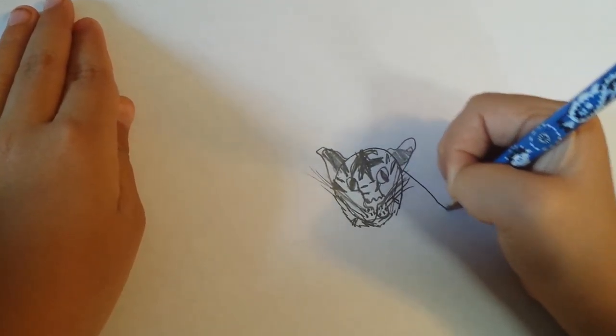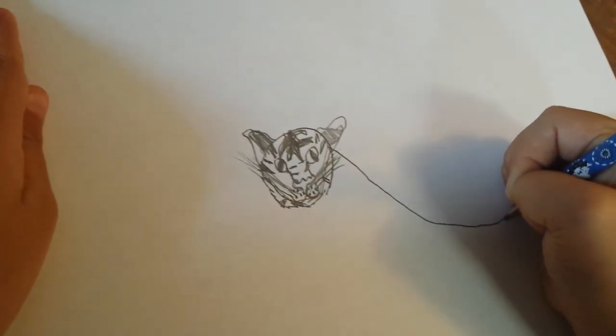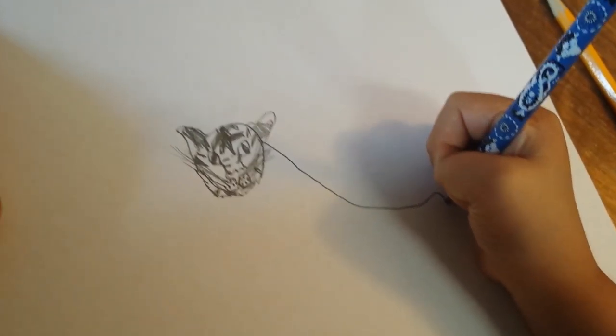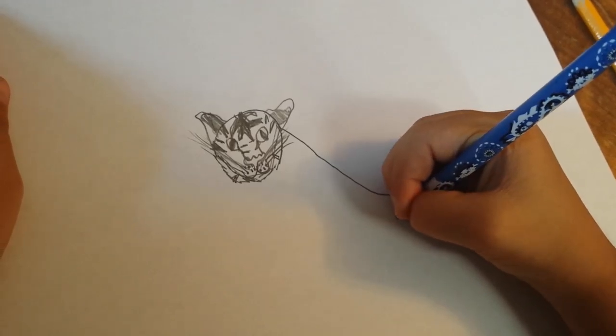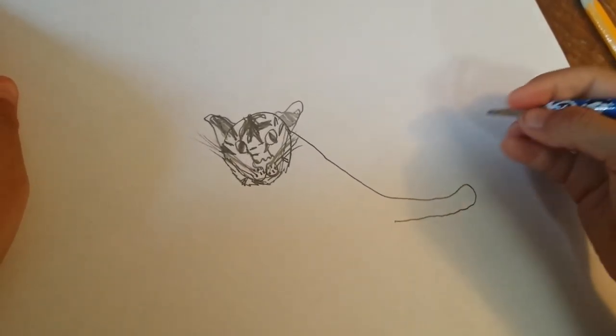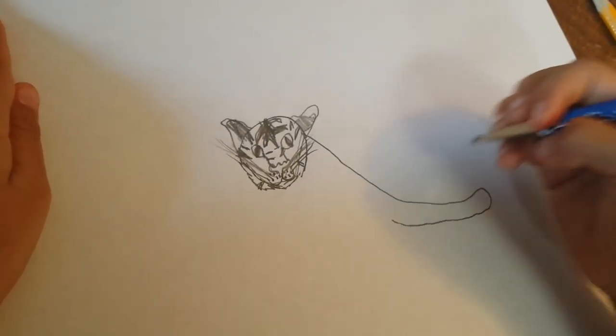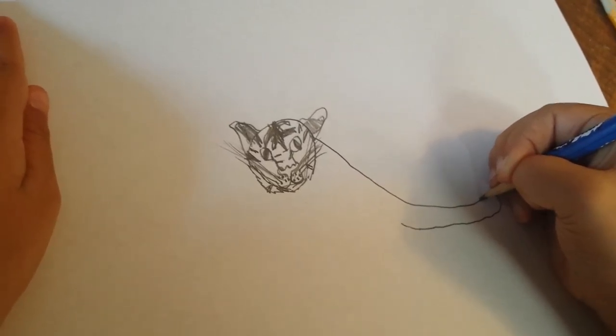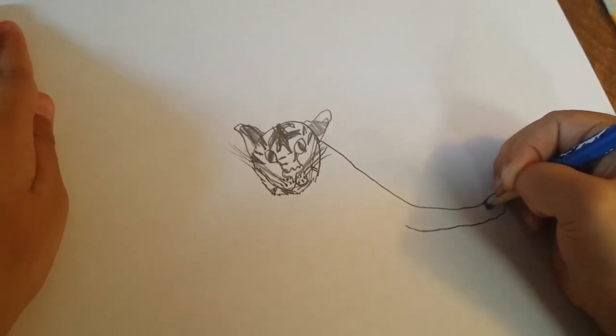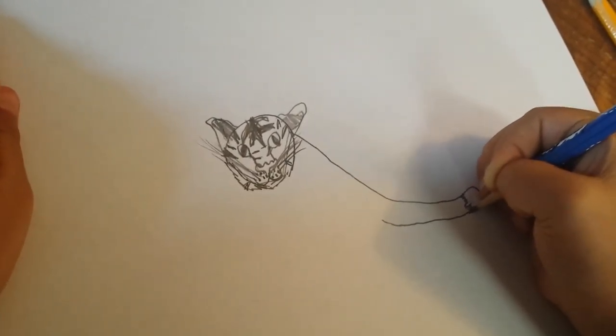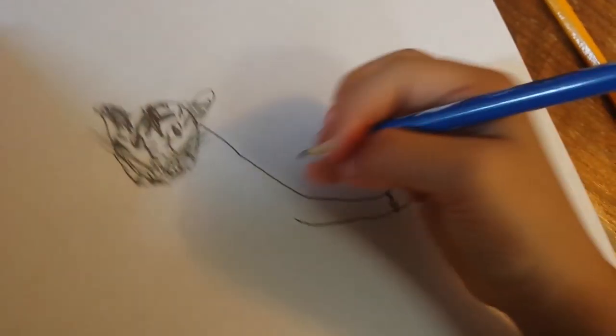And then we got the whole face done with stripes now. But now, we need to do the body. So, I'm going to go down. I'm going to do kind of a curve,